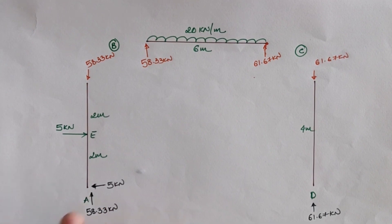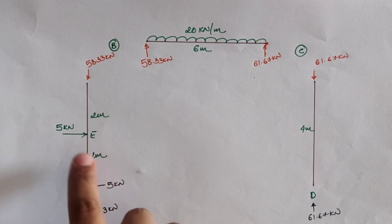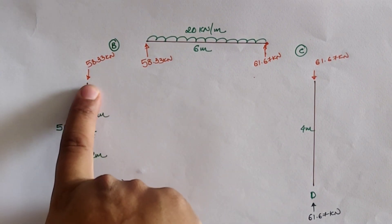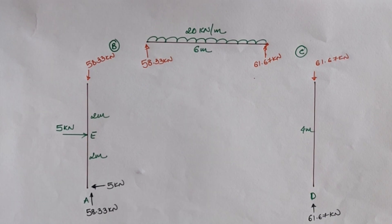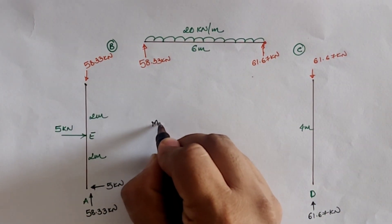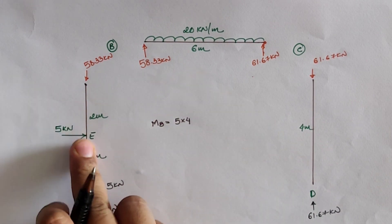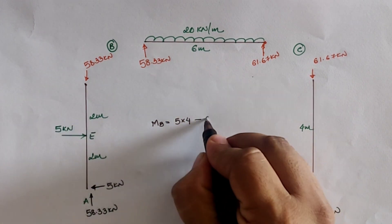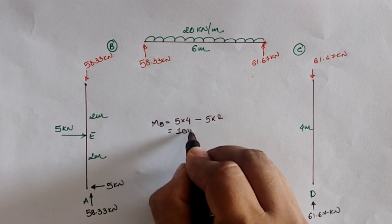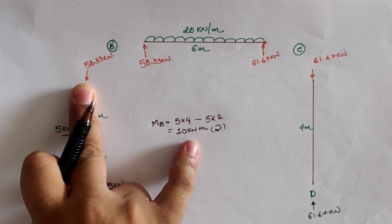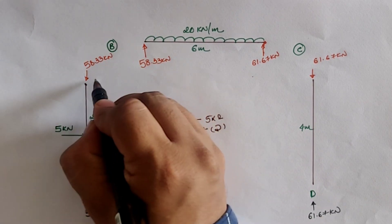For horizontal loading, the five kilo Newton reaction at A and the five kilo Newton load at E neutralize each other, so no horizontal load needs to be applied at location B. For the moment calculation, at location B the moment from the five kilo Newton load over four meters is 20 kilo Newton meter clockwise, and at location E it creates an anticlockwise moment of five into two equals 10 kilo Newton meter. The net moment at B is 10 kilo Newton meter clockwise.